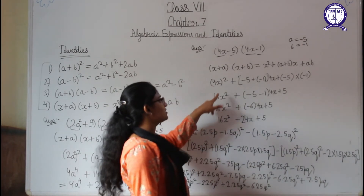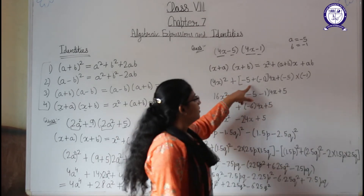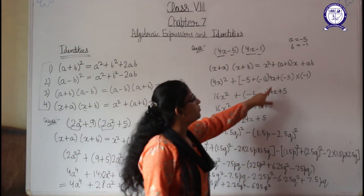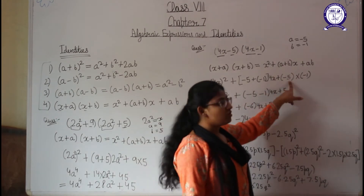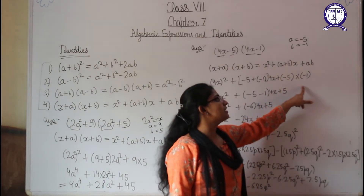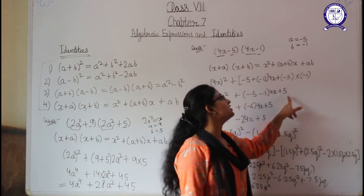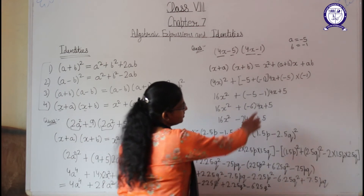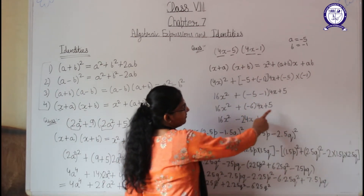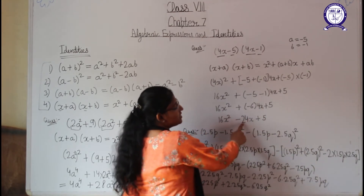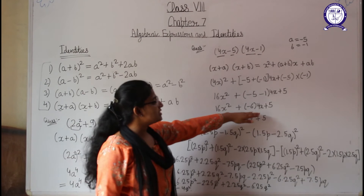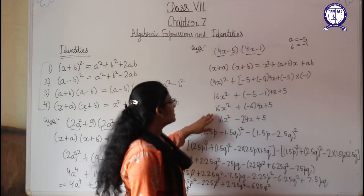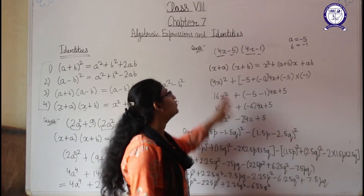Continuing: (−5) + (−1) = −6, so −6 × 4x = −24x. Then (−5)(−1) = +5, since minus times minus gives positive. So the answer is 16x² − 24x + 5.